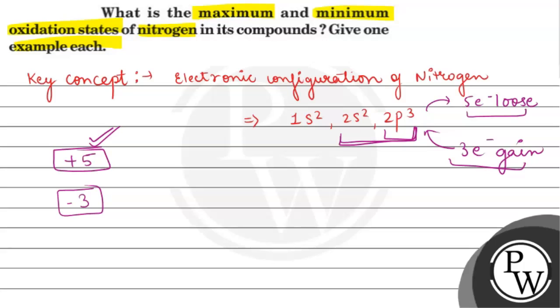So this is the key concept. Now answering the question, what is the maximum and minimum oxidation state of nitrogen? The answer is +5, because this is the maximum oxidation state, and minimum is -3, because more electrons cannot be gained.